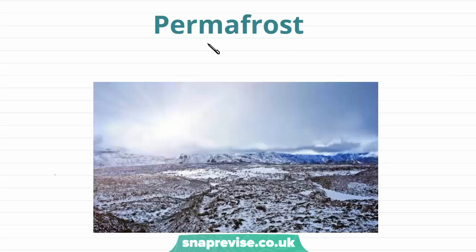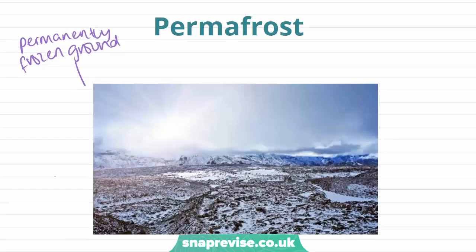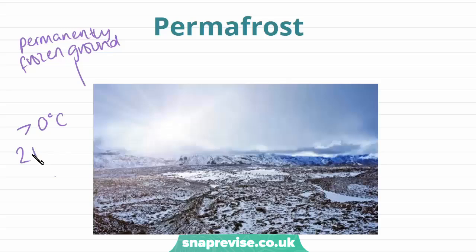The first feature we are going to look at is called permafrost, which I have mentioned in previous videos. This is another term for permanently frozen ground — the 'perma' in this name comes from the word permanently. For land to become permafrost, it has to remain less than zero degrees Celsius for more than two years, which freezes the ground.